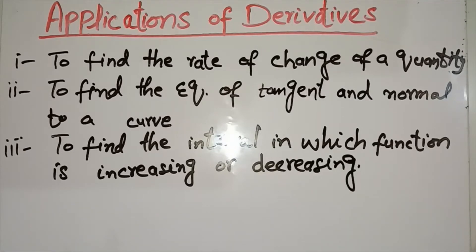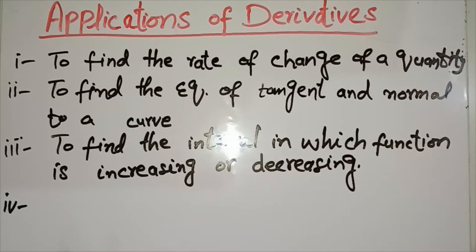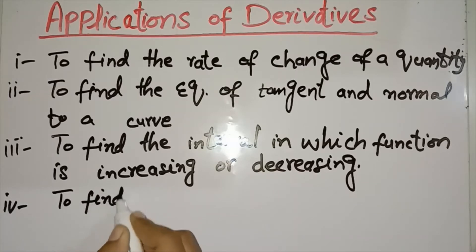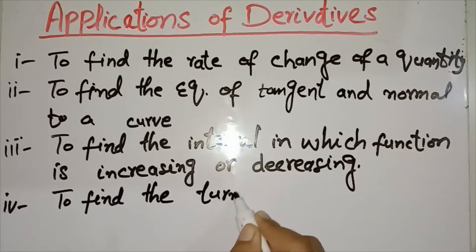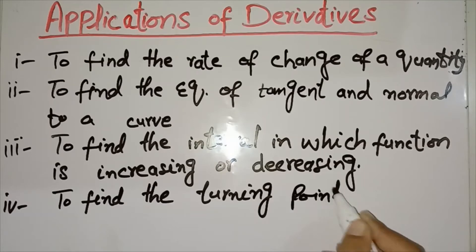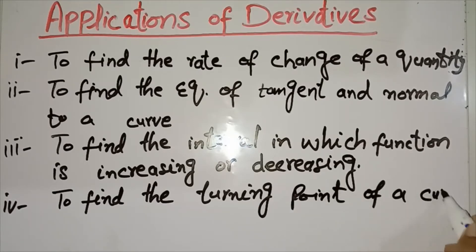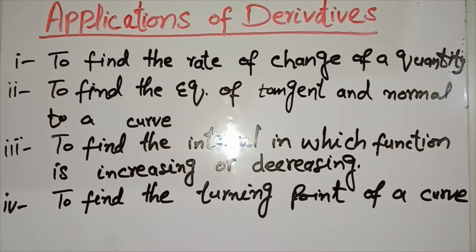We also use derivatives to find the turning point of a curve. The turning point is the point where the value of the function changes from increasing to decreasing, or vice versa. From that point, the value of the function will increase or decrease, and we use the turning point to find the derivative.